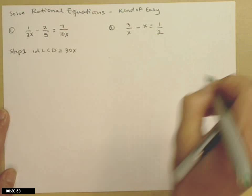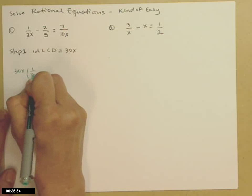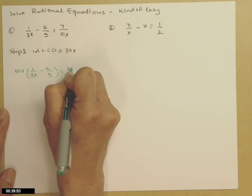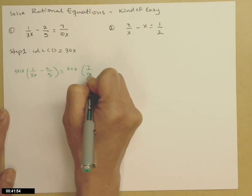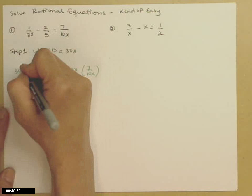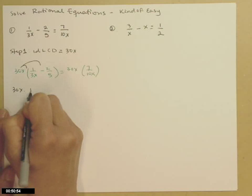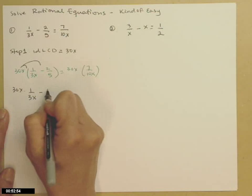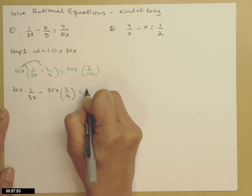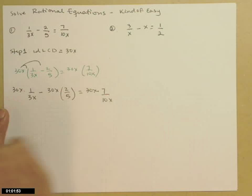What we're going to do then is take that 30x and multiply both sides of the equation by the LCD. On the left-hand side, it distributes because I have two terms there. So 30x times 1 over 3x minus 30x times 2 over 5 equals 30x times 7 over 10x.